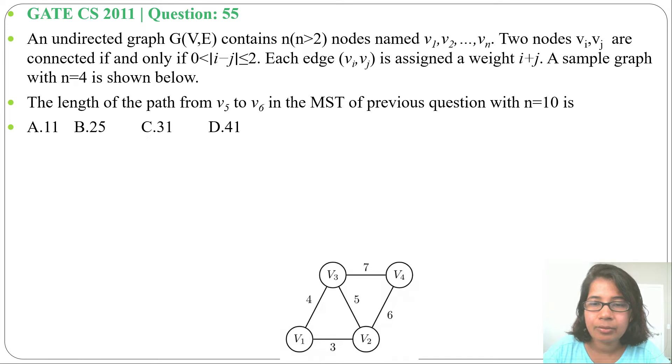So it is asking, if we find the MST with n equals 10, what will be the length of the path from v5 vertex to v6. So let me just create v5 vertex and v6. I'm not creating for all n values, means v7, v8, v9, and v10. I'm just creating v5 and v6 and I will add the weights. So v5 and v3 will be connected as 5 minus 3 is 2.